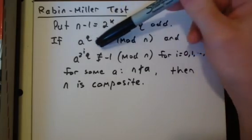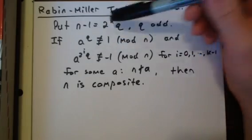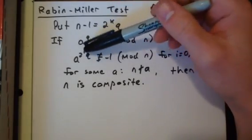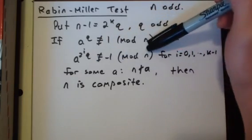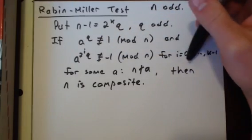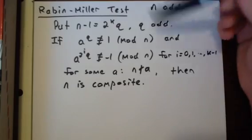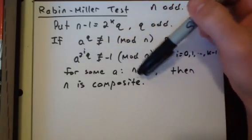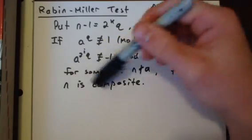Now if a to the q is not congruent to 1 mod n, and a to the 2 to the i times q is not congruent to negative 1 mod n for all i between 0 and k minus 1, and for some a that's not divisible by n, then n is composite.